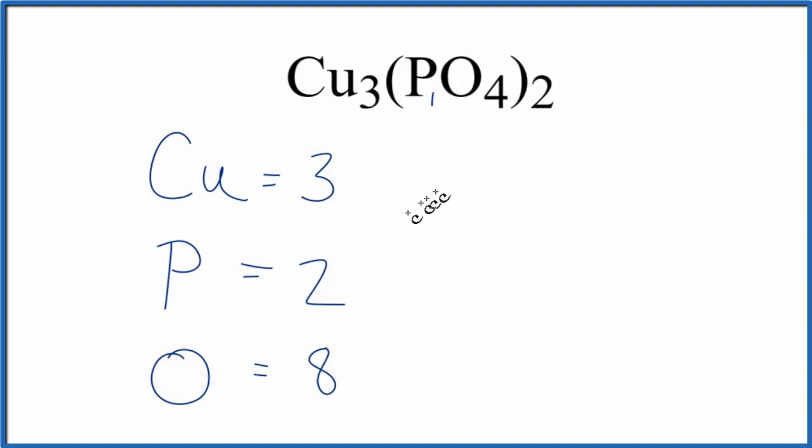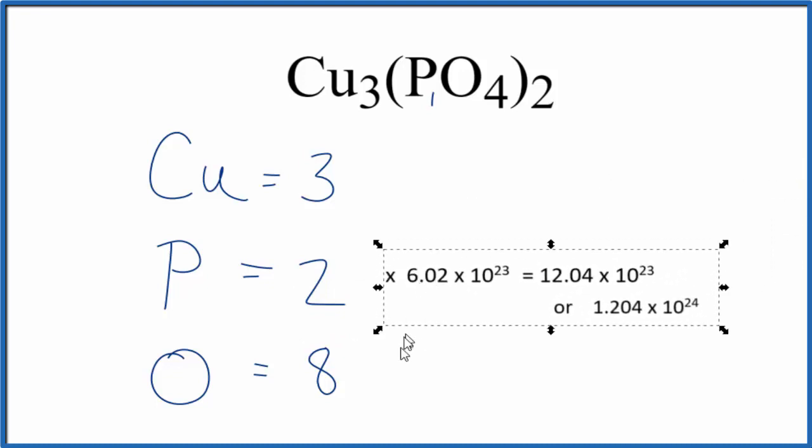Sometimes you'll be asked to find the number of, for example, phosphorus atoms in one mole of copper 2-phosphate. What you would do is multiply the number of phosphorus atoms times Avogadro's number. So two times Avogadro's number will give us the number of phosphorus atoms in one mole of copper 2-phosphate.